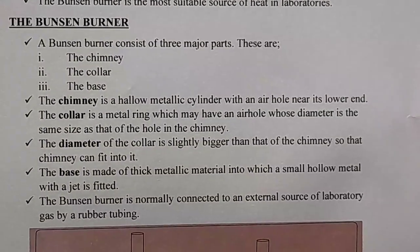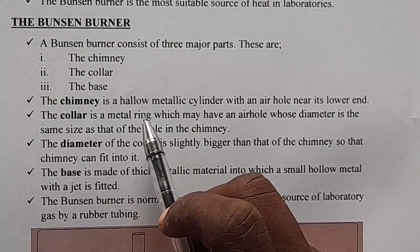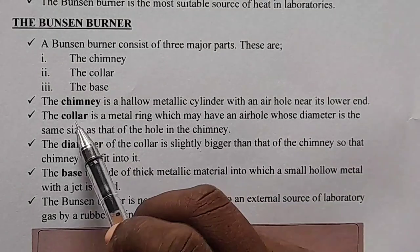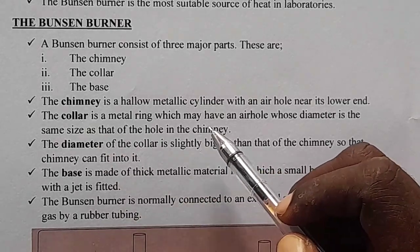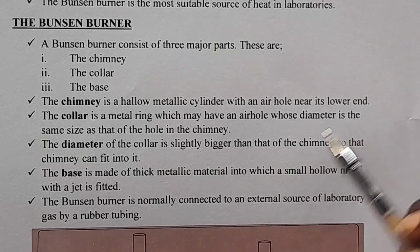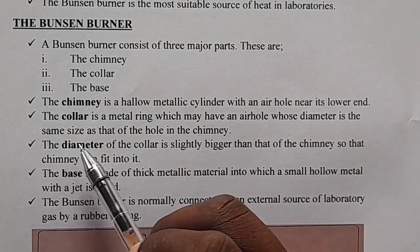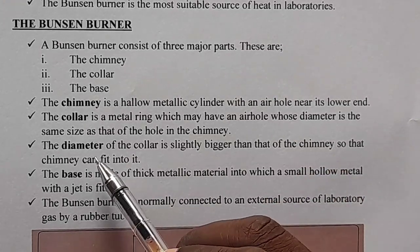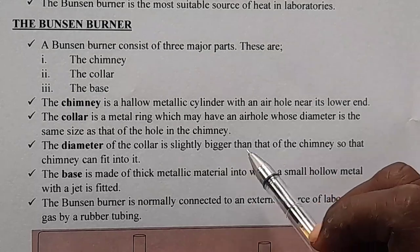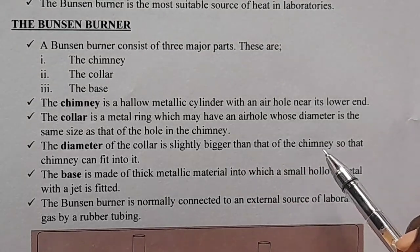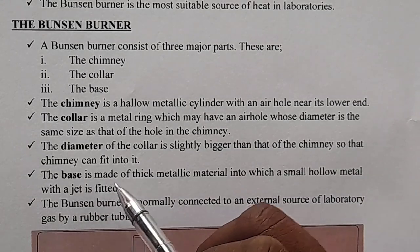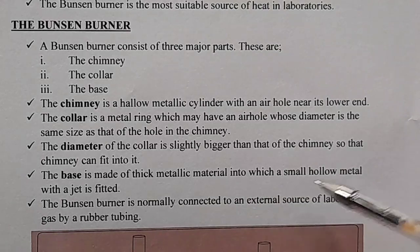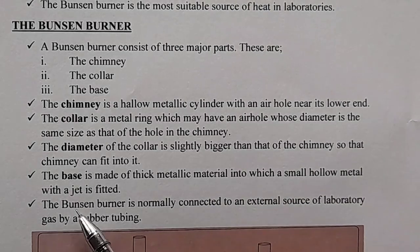The chimney is a hollow metallic cylinder with an air hole near its end. The collar is a metal ring which may have an air hole whose diameter is the same size as that of the hole in the chimney. The diameter of the collar is slightly bigger than that of the chimney, so that the chimney can fit into it. The base is made up of thick metallic material into which a small hollow metal with a jet is fitted.